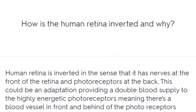How is the human retina inverted and why? The human retina is inverted in the sense that it has nerves at the front of the retina and photoreceptors at the back. This could be an adaptation providing a double blood supply to the highly energetic photoreceptors, meaning there's a blood vessel in front and behind the photoreceptors.